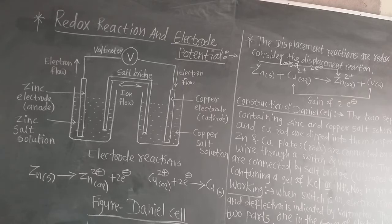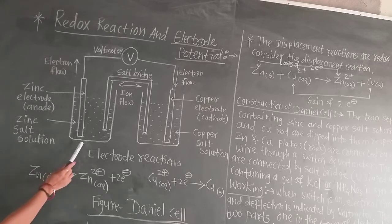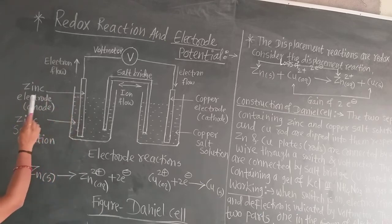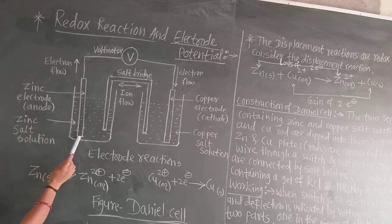What is the use of a voltmeter? It measures the current — you know in physics a voltmeter is used for measurement. Now see here: there are two containers, which may be of glass or plastic. In the first container there is zinc salt solution, and the same metal rod — the zinc electrode — is dipped into this zinc salt solution, suppose zinc sulphate solution.